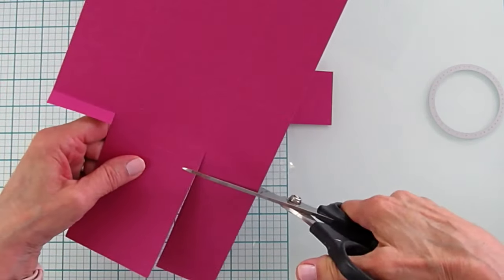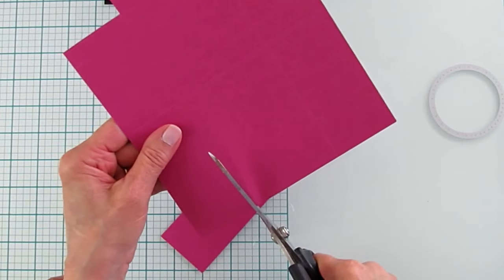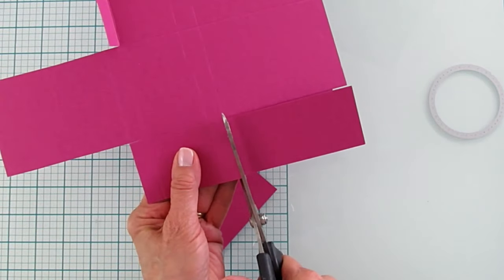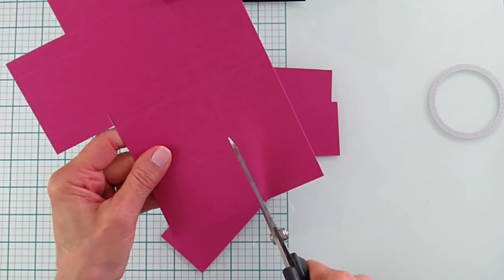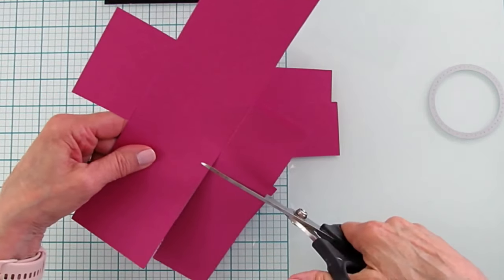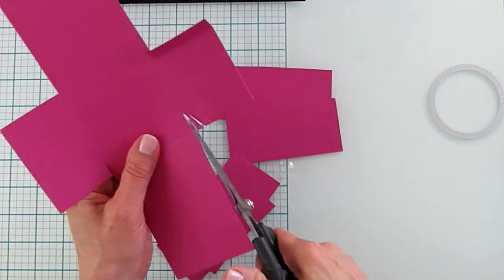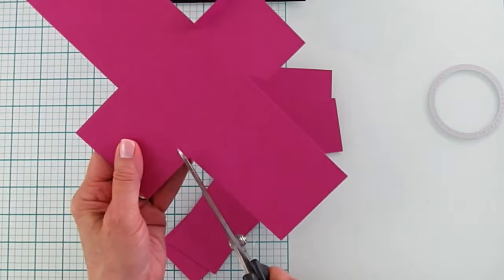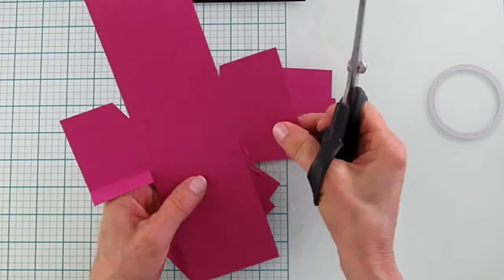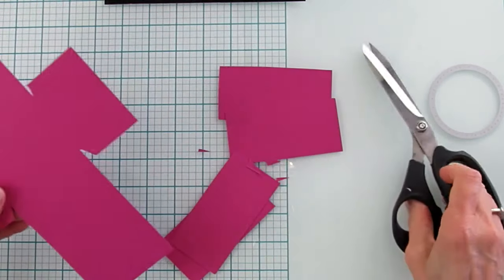Again, do the same thing on this side. And then we're going to do the same on this side. And this side as well. So I am just going to cut out from the inside here. And I'm going to leave the outside so it's nice and square there.